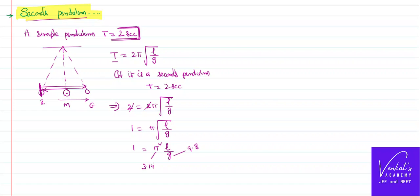π value is 3.14, if you square it that also becomes approximately 9.8. So you can approximately cancel these two things. What is going to remain then is 1 is equal to l because this g and this π² gets cancelled.